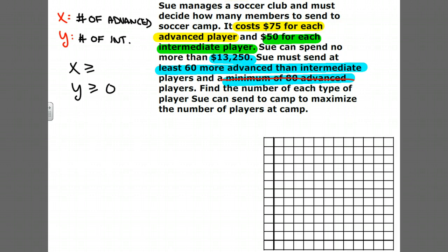She must also send 60 more advanced than intermediate. How do we represent this mathematically? 60 more advanced than intermediate means X needs to be at least, which is greater than or equal to, 60 more than Y.